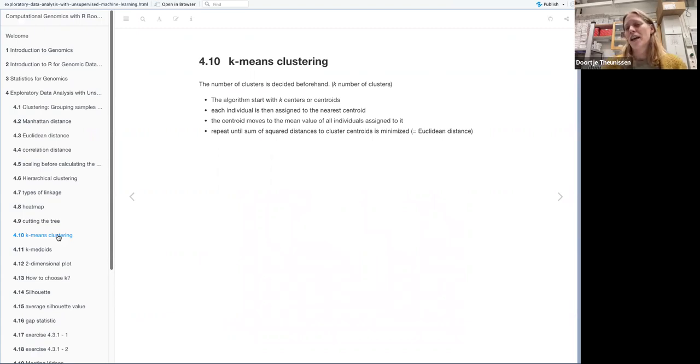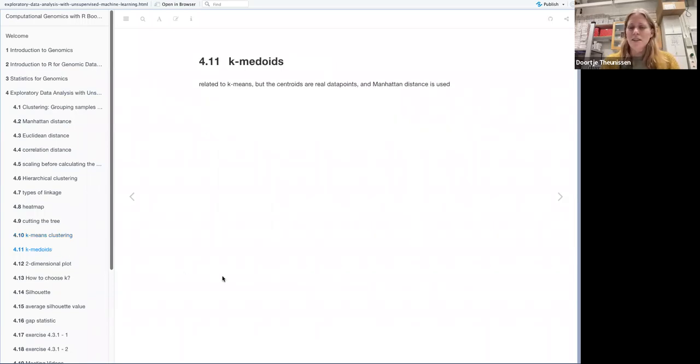So this is k-means clustering. So k stands for the number of clusters that you want. And the way it works is that you decide your number of clusters and then the algorithm places centers, also called centroids, randomly around. And then each individual gets assigned to the closest centroid. And all the individuals that are connected to one centroid, their mean value will be calculated and then the centroid will move to that place. And then everybody gets assigned again and so on until the centroids stop moving because the sum of square distances is minimized. So this one uses the Euclidean distance. And there's also a variant on k-means clustering which is called k-medioids and it works the same but it uses real data points instead of just random places and it uses Manhattan distance instead of Euclidean.